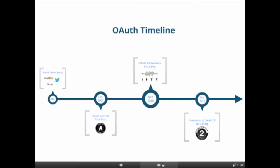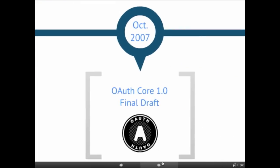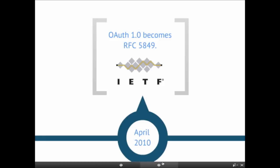Regarding the OAuth timeline: it started in 2007 when Twitter, Magnolia, and others saw the same problem and started a special interest group. Google joined a few months later, and in October 2007 there was a final draft of the OAuth Core 1.0 standard. Unfortunately, the implementations were all different and not easy to use together — each had its own peculiarities. Later, the IETF became interested, and by 2010 it became RFC 5849, an internet standard adopted by more and more services.